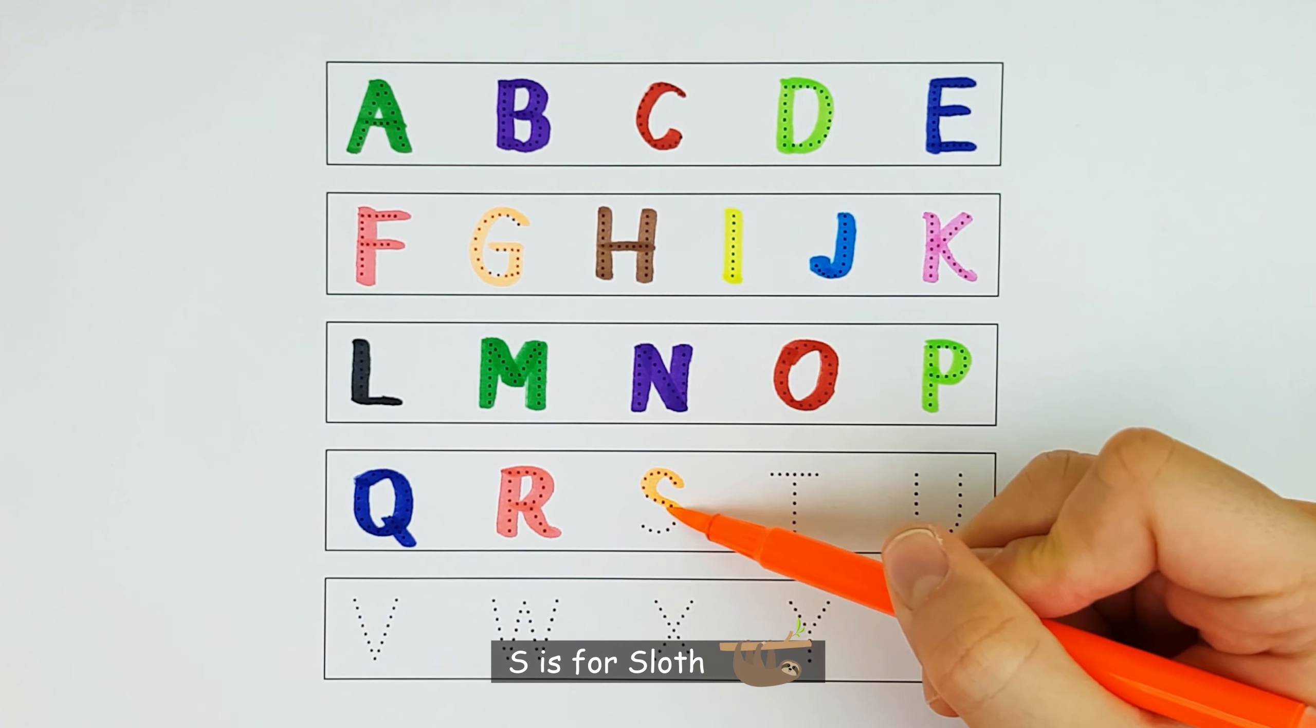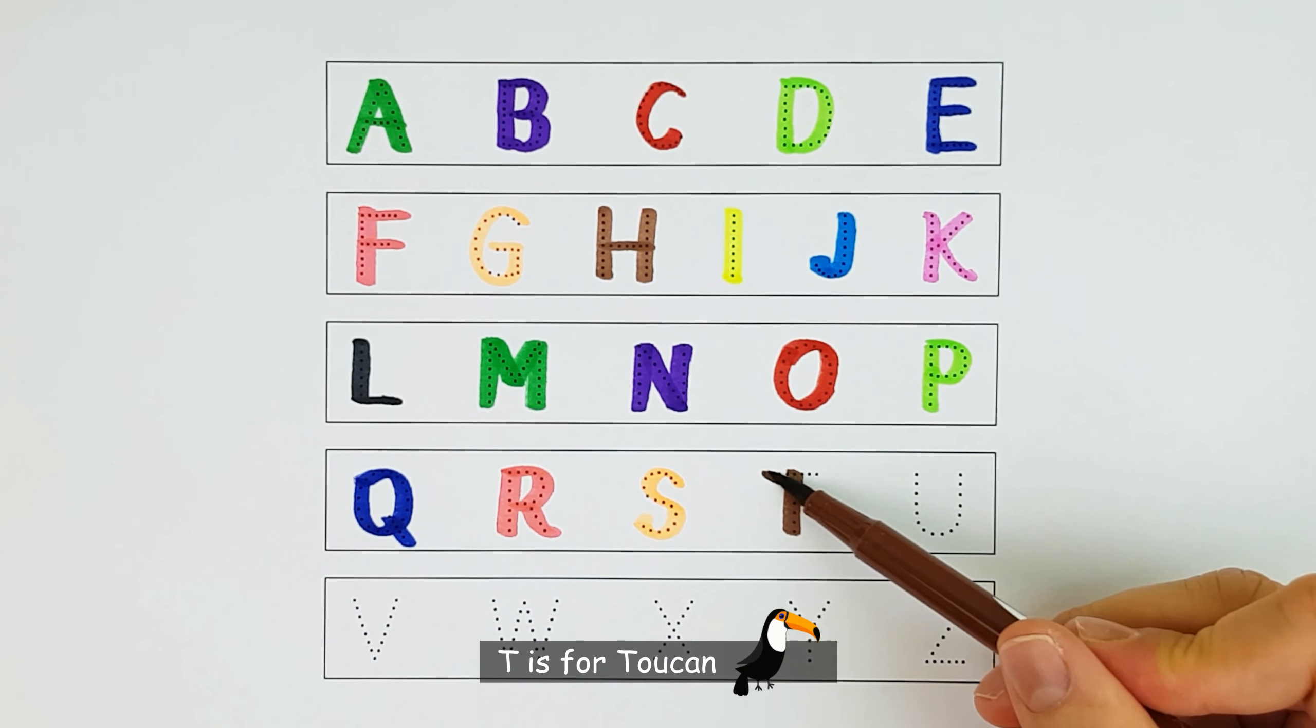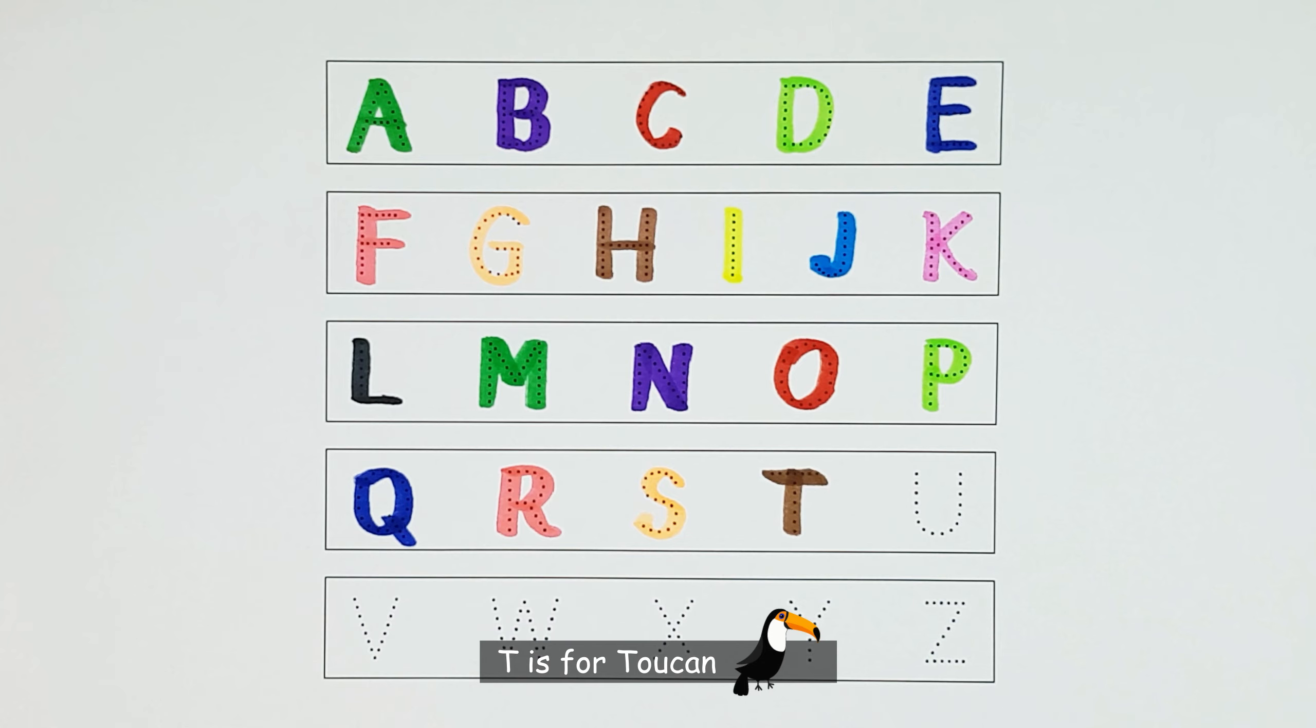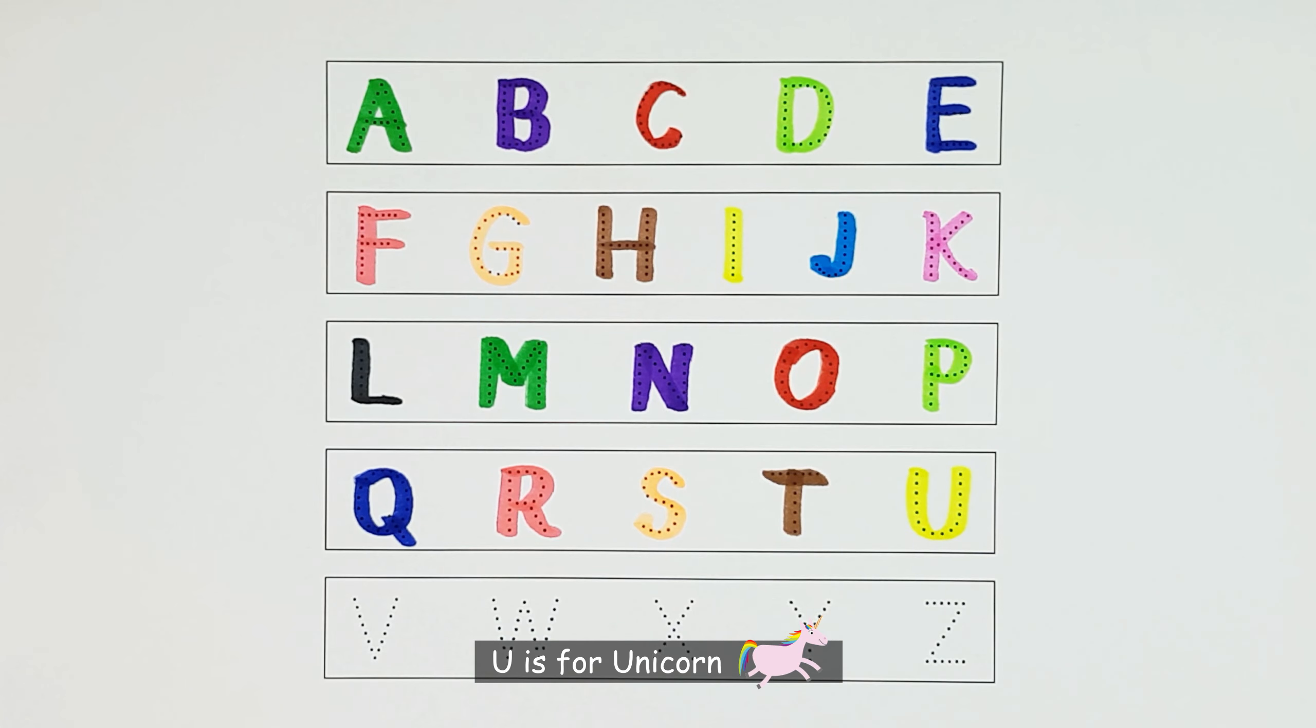S. S is for Sloth. T. T is for Toucan. U. U is for Unicorn.